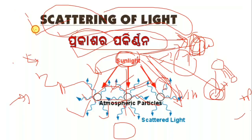This example is the scattering of light. We will see the blue sky during the day — we will see the blue. This example is very important.